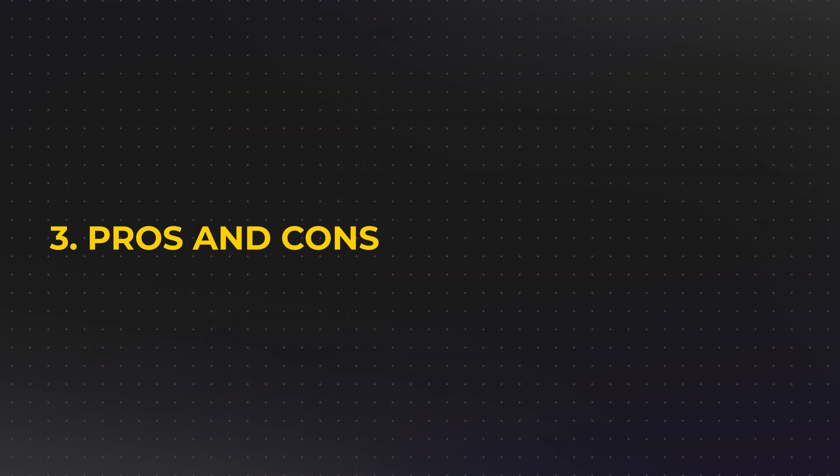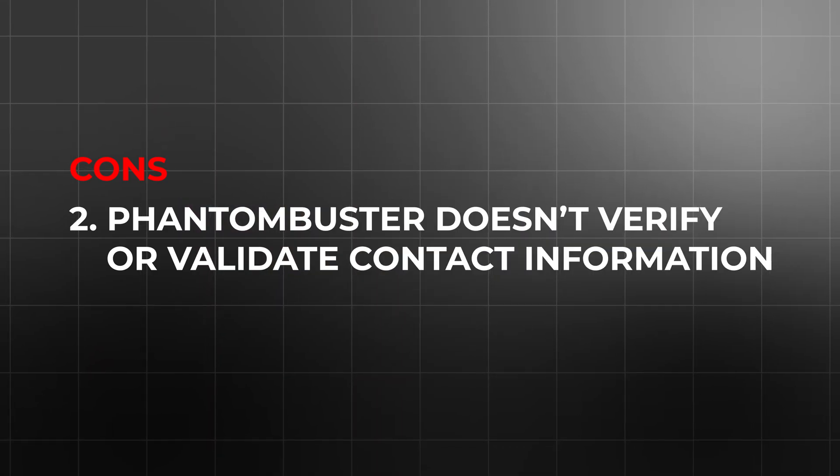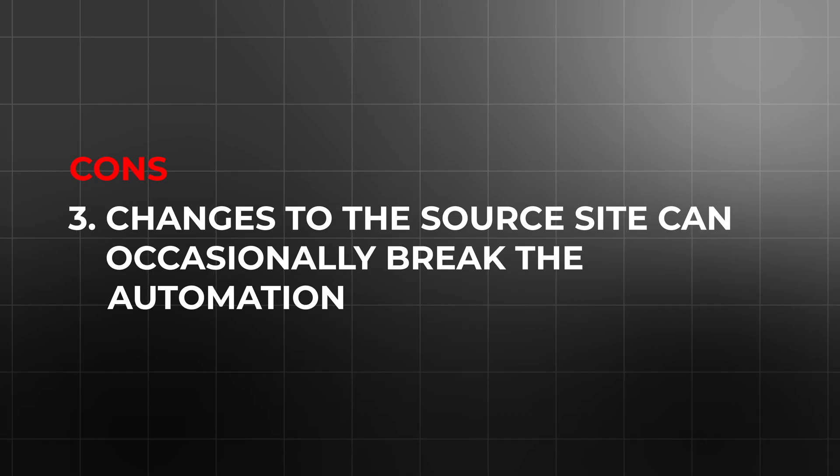Now let's dive into some of the pros and cons of using Phantom Buster for local lead generation. One of the biggest advantages is speed — what would take hours to pull manually from Google Maps can be done in minutes. It's also highly customizable, so your lead list reflects exactly the businesses you want to reach, and you can export it into Google Sheets or CSV to plug right into your CRM, email tool, or tracking sheet. That said, there are a few limitations: Phantom Buster can only pull data that's publicly visible, it doesn't verify or validate contact information, and like all scraping tools, changes to Google Maps can occasionally break the automation — though Phantom Buster does update its phantoms regularly.